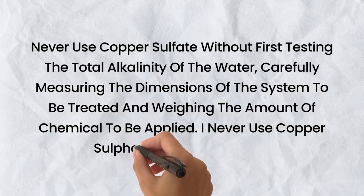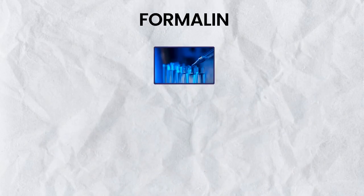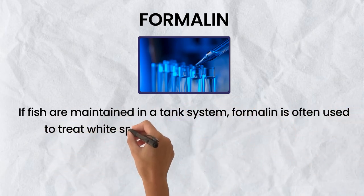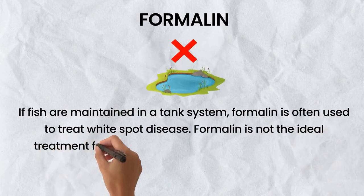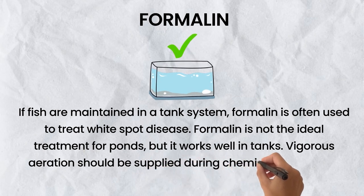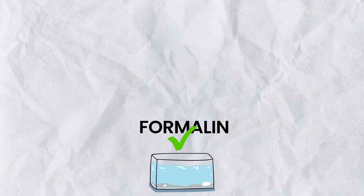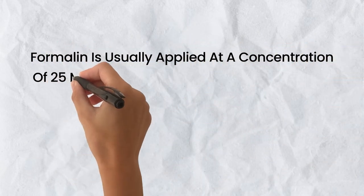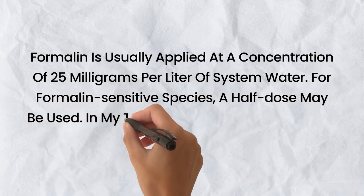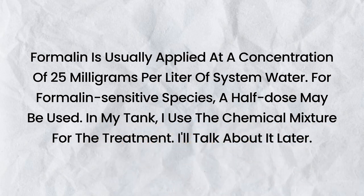I never use copper sulfate for my aquarium. Formalin is often used to treat white spot disease in tank systems and works well in tanks, though it is not ideal for ponds. Vigorous aeration should be supplied during chemical treatments, especially if gills have been damaged. Formalin is usually applied at a concentration of 25 milligrams per liter of system water; for formalin-sensitive species, a half dose may be used. In my tank, I use a chemical mixture for treatment, which I'll talk about later.